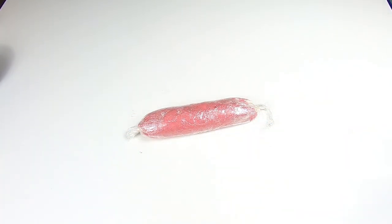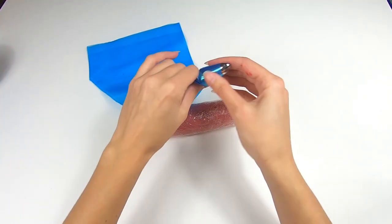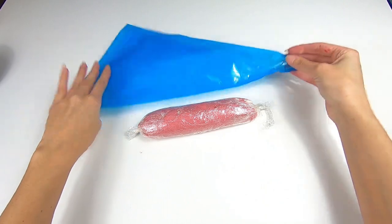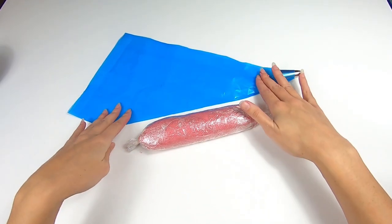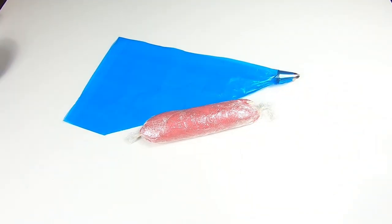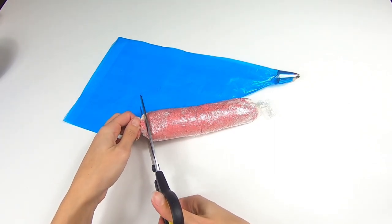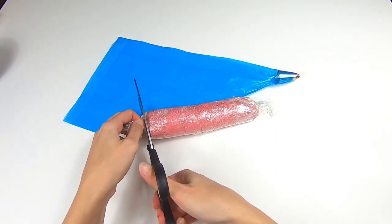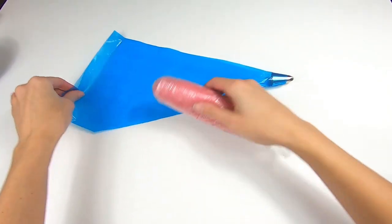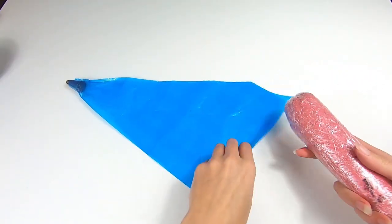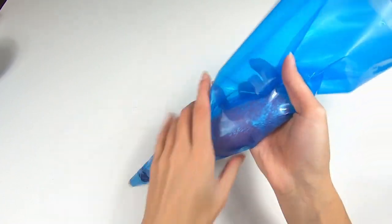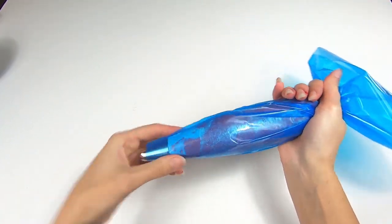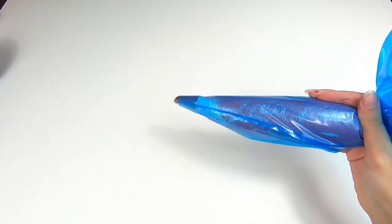Then we want to insert that into our piping bag. We've got that attached with the 2D attachment. We're going to snip the end off and then pop it in the piping bag. And then we're just going to do that for the other one as well.